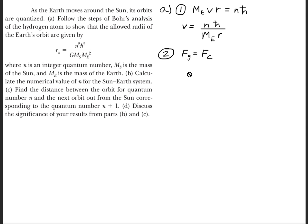The next thing we need to do is set the gravitational force equal to the centripetal force. If we expand what those forces are, the gravitational force is the gravitational constant times the mass of the Earth times the mass of the Sun divided by the separation distance.